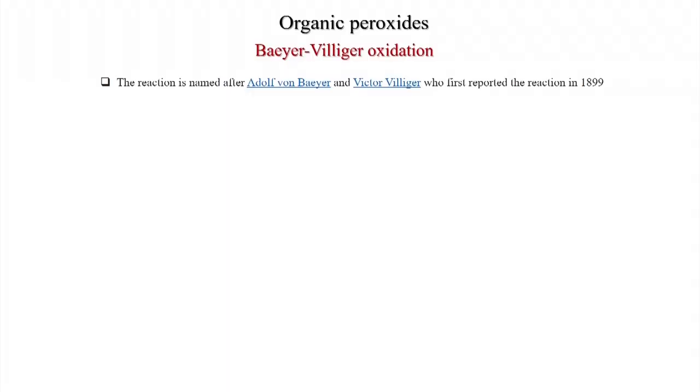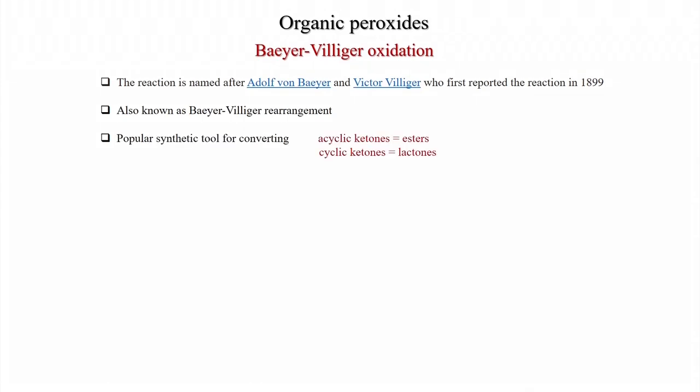Today we will discuss organic peroxide mediated reactions. First we will discuss Baeyer-Villiger oxidation, and then we will discuss Sharpless epoxidation. The Baeyer-Villiger reaction is named after Adolf von Baeyer and Victor Villiger, who first reported the reaction in 1899. It is also known as Baeyer-Villiger rearrangement and is a popular synthetic tool for converting acyclic ketones to esters and cyclic ketones to lactones.